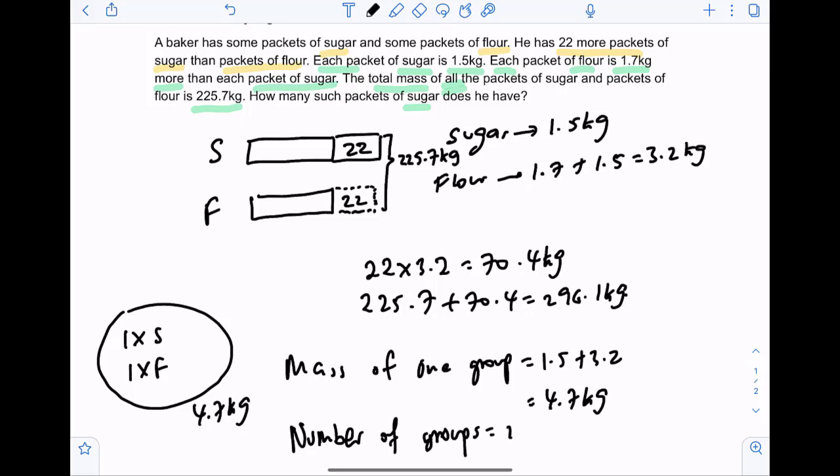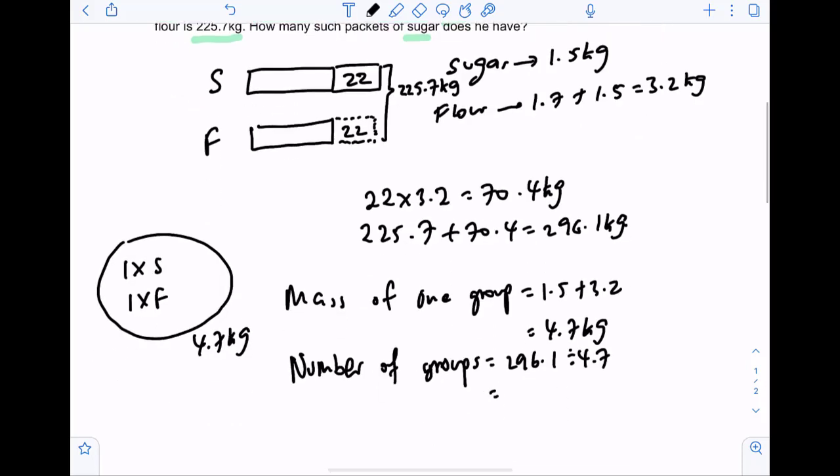So what we can do next is find the number of such groups, which will be equals to 296.1 divided by 4.7. 296.1 divided by 4.7, which will give us 63 of such groups.